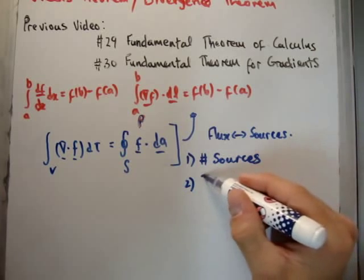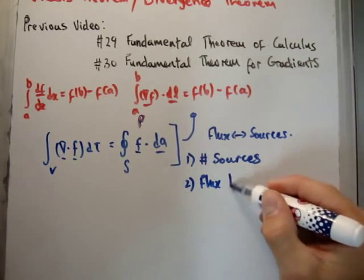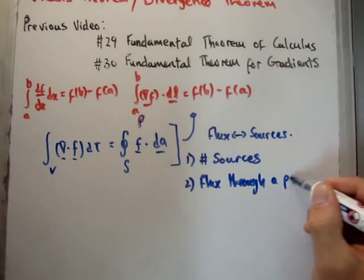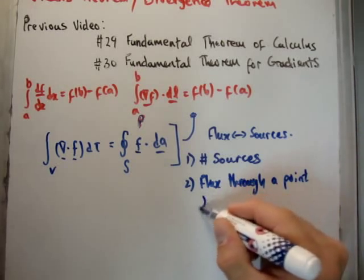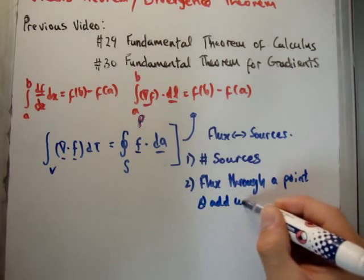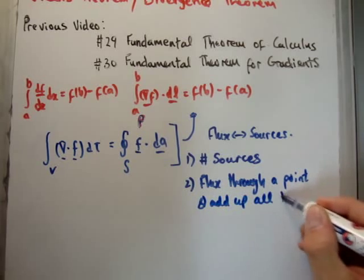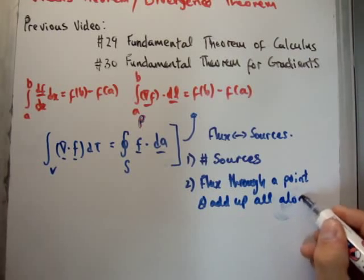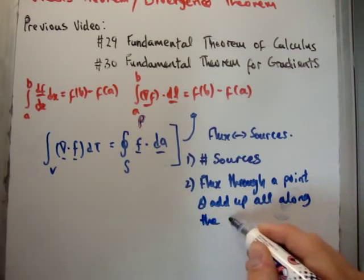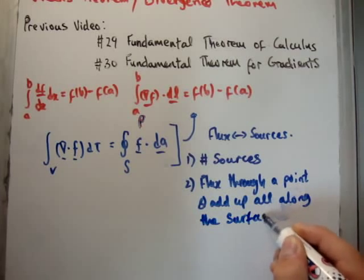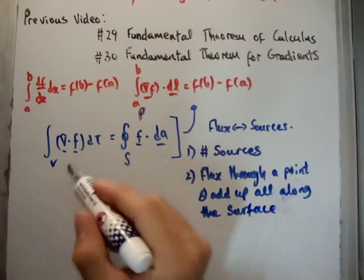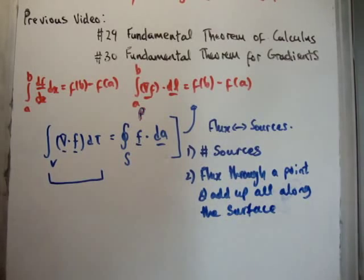Or, that's one way of doing it, or we can see the flux through the point on the surface, and add up all along the surface. All along the surface. Okay, there are two different ways of calculating the divergence. And what you'll see here is this integral calculates the number of sources, and this integral here looks at the flux.